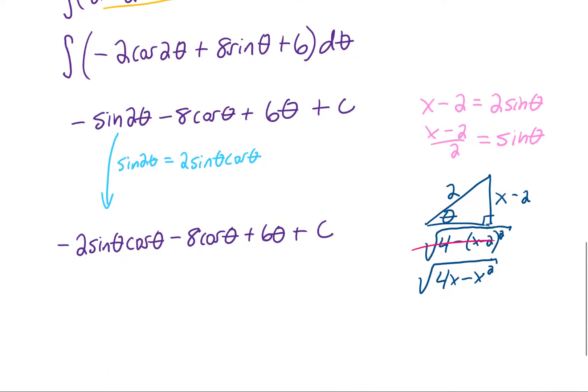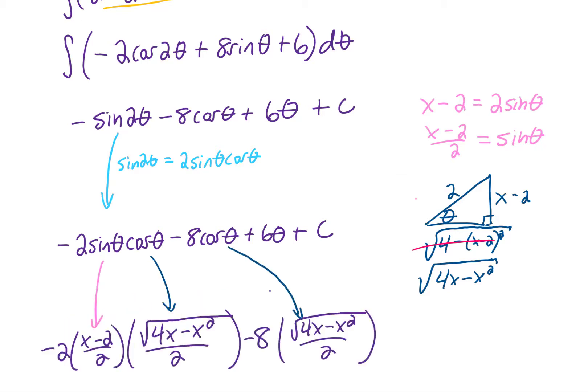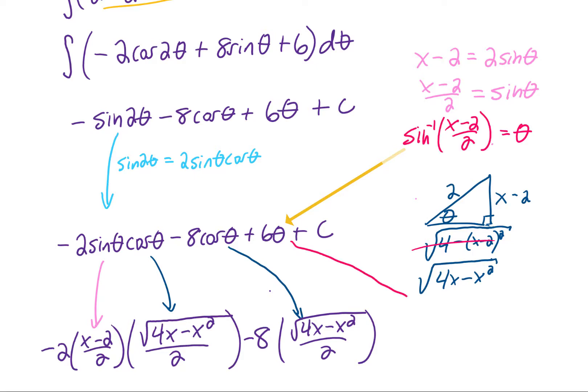Okay, now let's rewrite this one term at a time. We know that sine of theta is x minus 2 over 2. From the triangle, we know that cosine of theta is going to be adjacent over hypotenuse, or the square root of 4x minus x squared over 2. Doing that one more time for this cosine, and to rewrite this final theta right here, I need a little bit of room, so let's move that over. We can solve this equation for theta by taking an inverse sine of both sides. Okay, so finally we can rewrite theta.